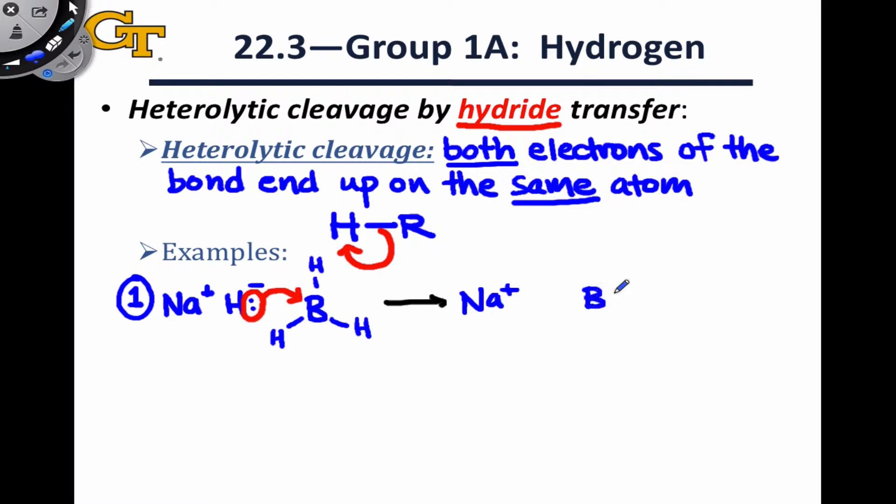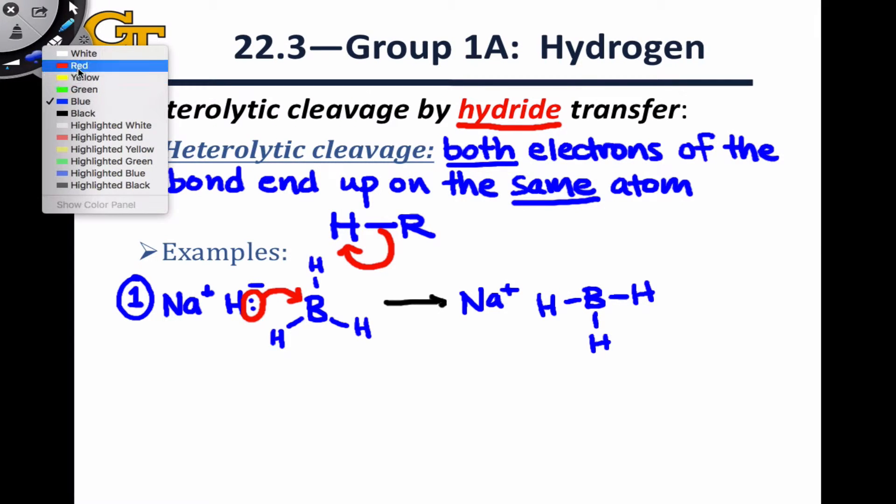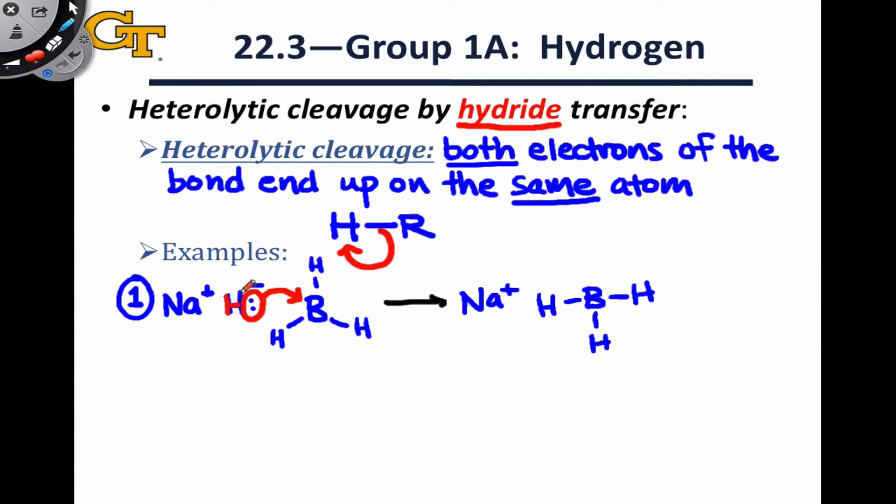To complete this reactivity, we need to think about donation of this lone pair on hydrogen to the Lewis acidic boron center. This results in a set of products where the sodium ion is still around. It's really just a spectator, and we're left with boron now with four bonds: H, H, and H, the three original hydrogens, as well as the new hydrogen, which I'll draw in red just to distinguish it from the hydrogens that were originally present on the boron, and that now has a formally negative charge. Notice in this example that hydrogen is acting as a Lewis base. That's a key general principle here.